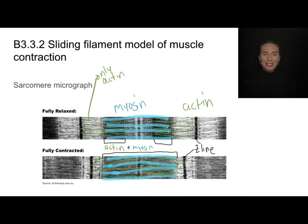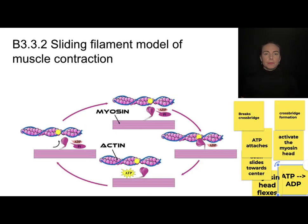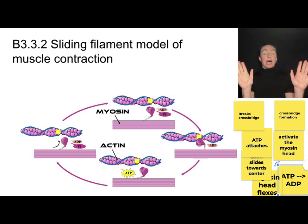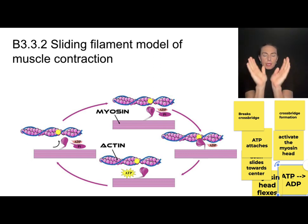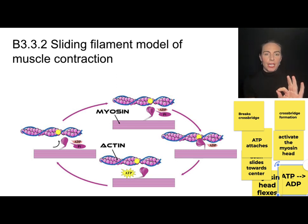To summarize the banding pattern: the light band where there is only actin gets much smaller when contracted, and there is a larger area of actin-myosin overlap, which shows up as very dark banding in the micrograph. Now let's figure out how this actually happens — what myosin does to slide the actin filaments closer toward the center of the sarcomere.